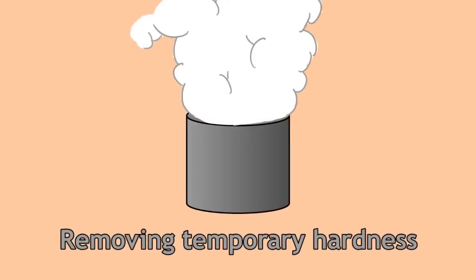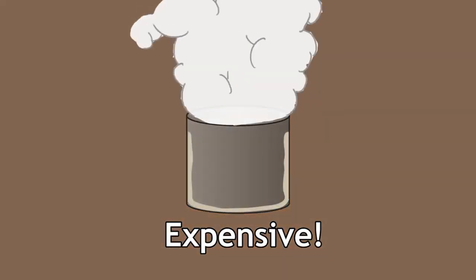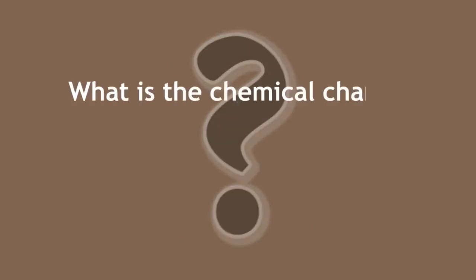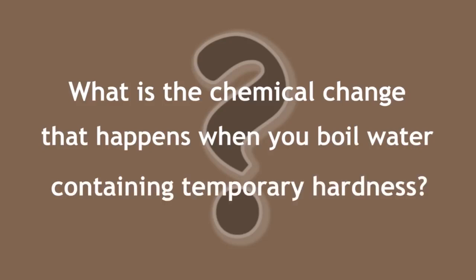You can remove temporary hardness by boiling the water, as we learnt in the previous unit, but this is expensive and causes lime to deposit on the sides of your container. So here's a question: what is the chemical change that happens when you boil water containing temporary hardness — that is, hardness caused by calcium hydrogen carbonate? Pause the video whilst you think of your answer.